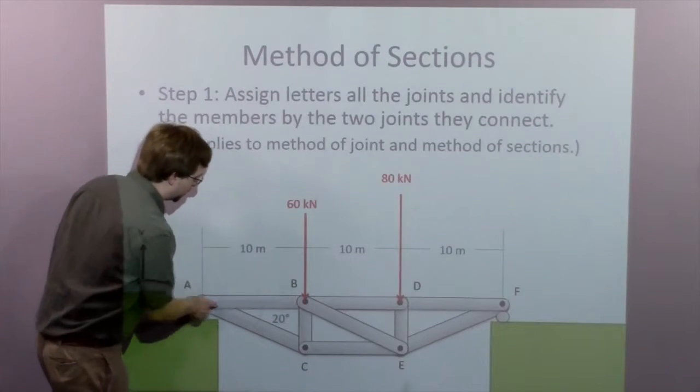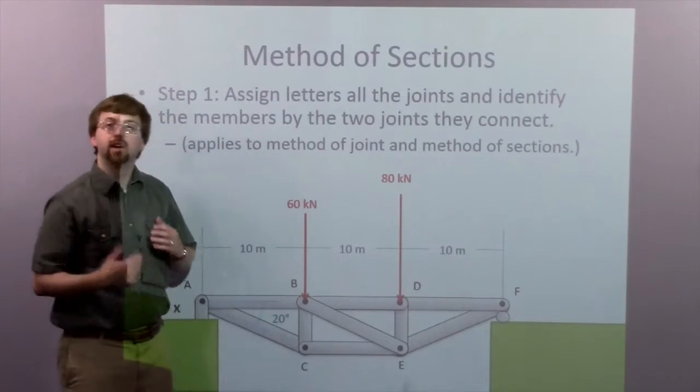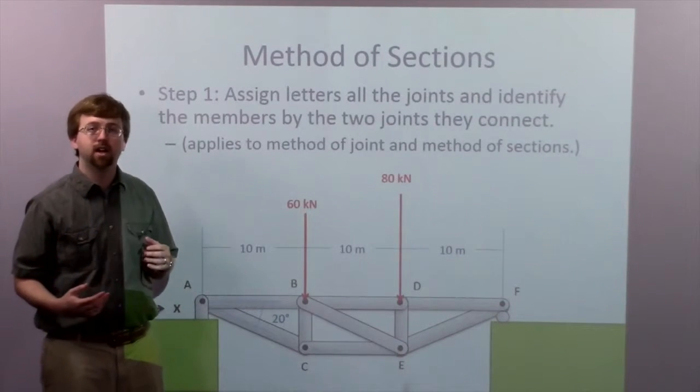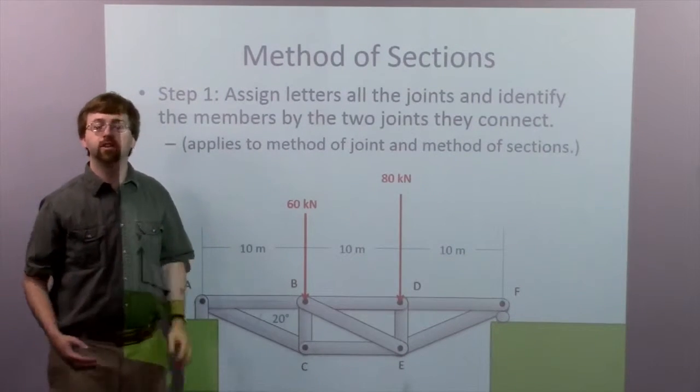Each joint has a letter, and the members are labeled by the two joints they connect. So member AB would connect joint A and joint B, etc. This is kind of the standard method for labeling joints and members in trusses.